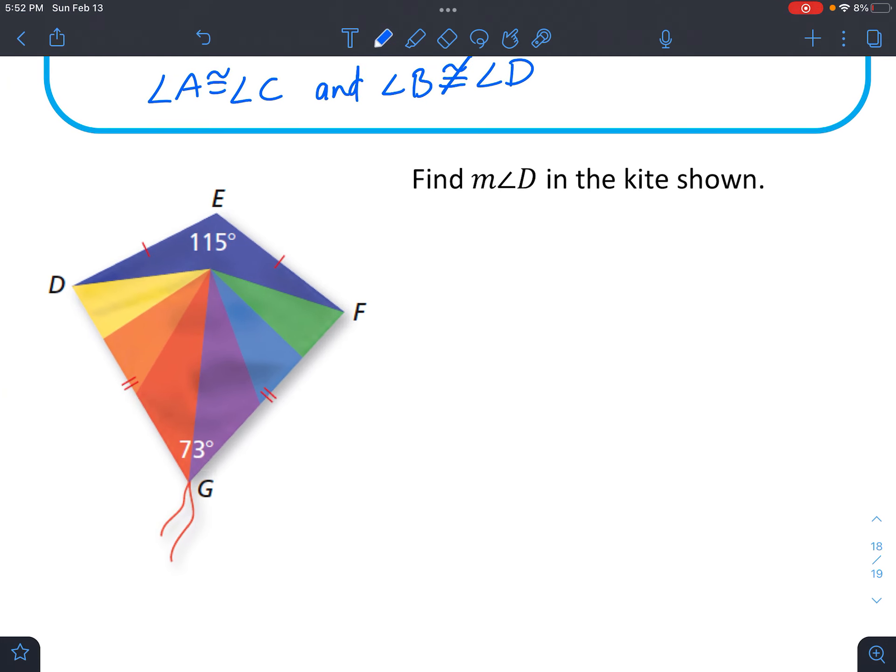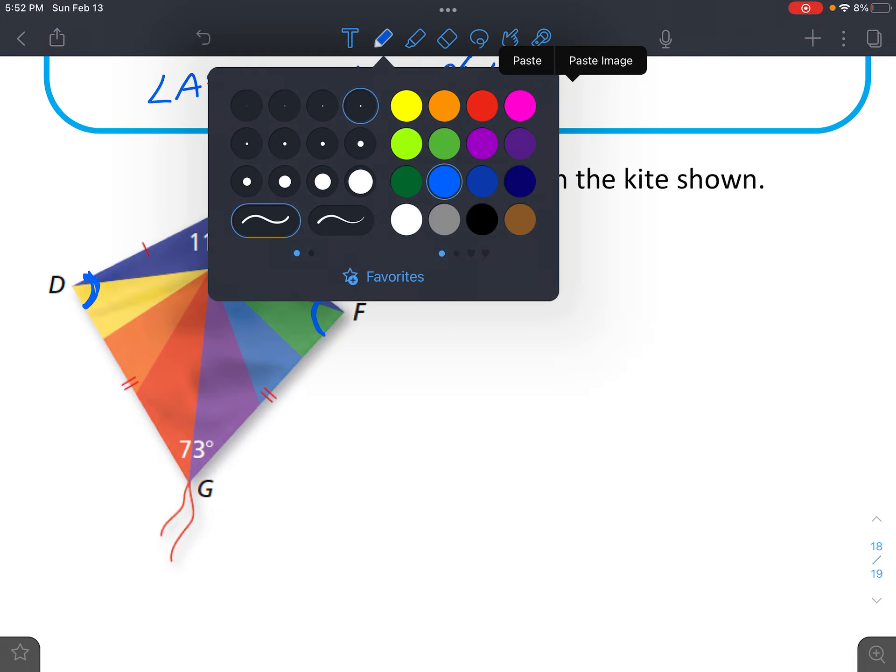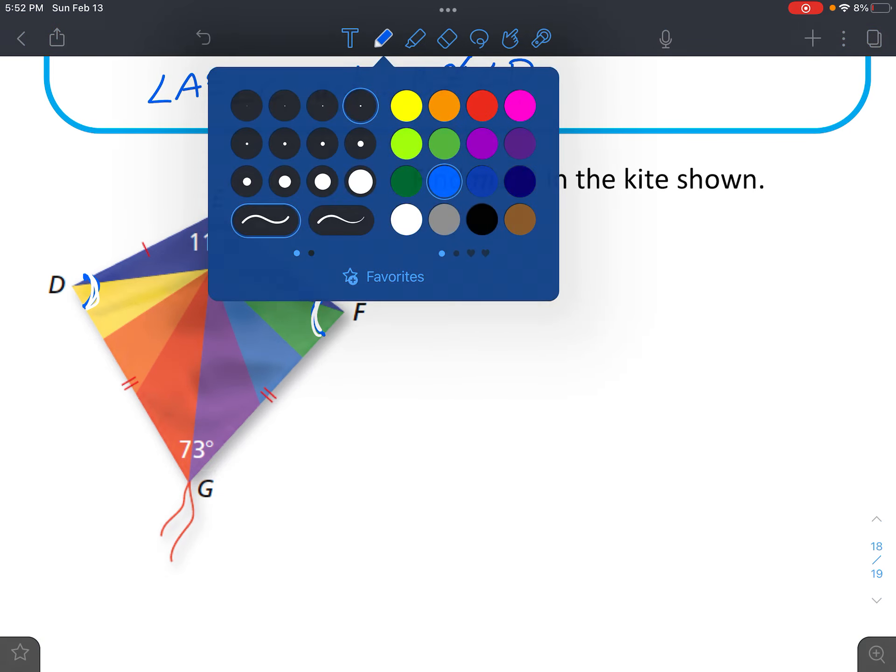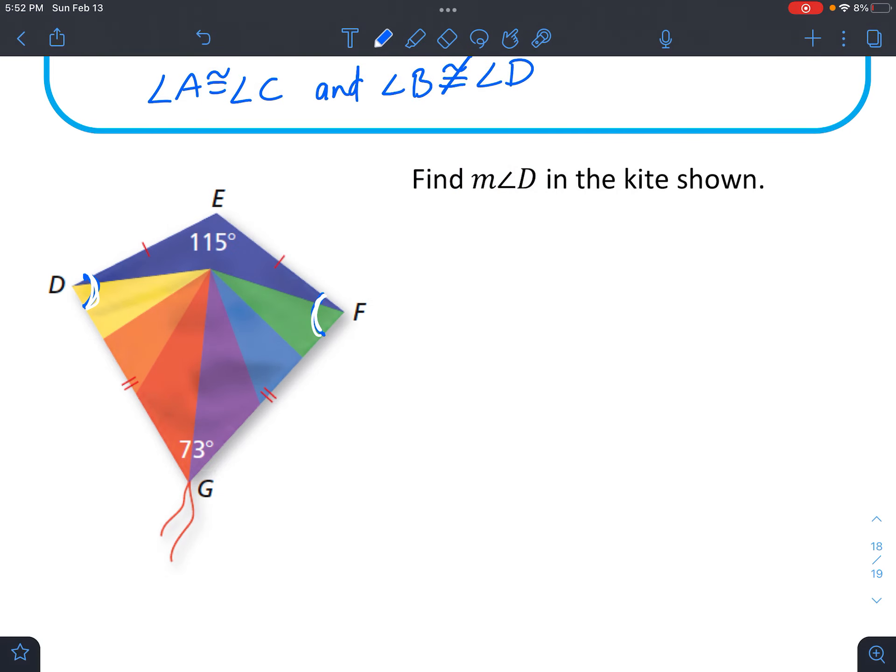So let's find angle D in this kite. Let's see here. So we know that angle D is the same as angle F. Sorry, that's a little hard to see. I'll put it in white. And that tells us that we could actually represent that with a variable. I'm going to call it X.